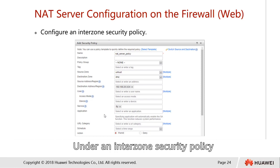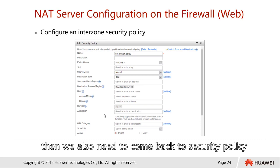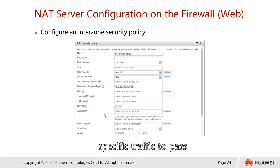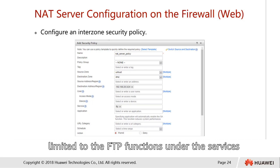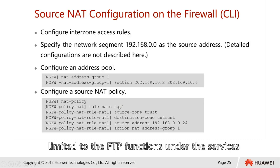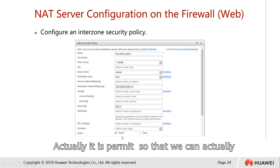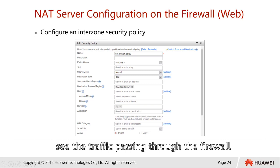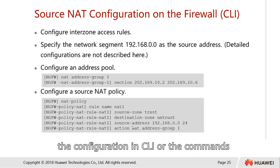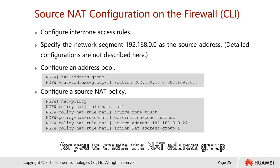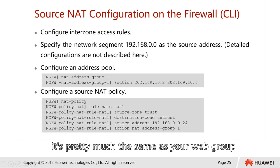Under the inter-zone security policy, we have the NAT policy. We also need to come back to the security policy in order to allow specific traffic to pass through — for example, from untrust to DMZ. We set up all the parameters to limit traffic to FTP functions under services, and the action is permitted so that traffic can pass through the firewall. The CLI configuration for creating the NAT address group is similar to the web GUI.